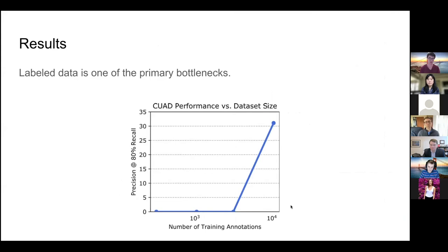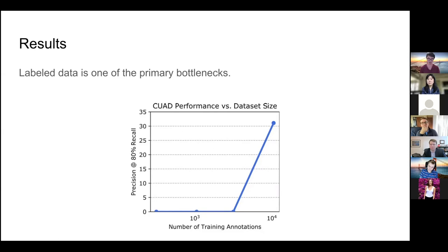Labeled data is a huge bottleneck here. QUAD has introduced 14,000 annotations. It turns out that if you use even slightly less — something like 4,000 annotations — precision at 80% recall drops to zero. You really do need more data to get any reasonable performance. This demonstrates how important and valuable the data curated by Wei and her collaborators actually is.